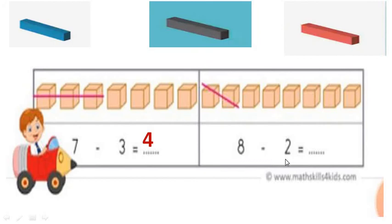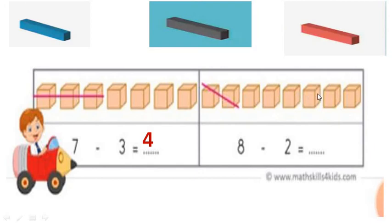The sum is 8 minus 2. I have 8 objects. Out of that, I have to cut or reduce 2 objects: 1 and 2. We should write the remaining objects — we are doing subtraction, so we count the remaining: 1, 2, 3, 4, 5, and 6. So 8 minus 2 equals 6.